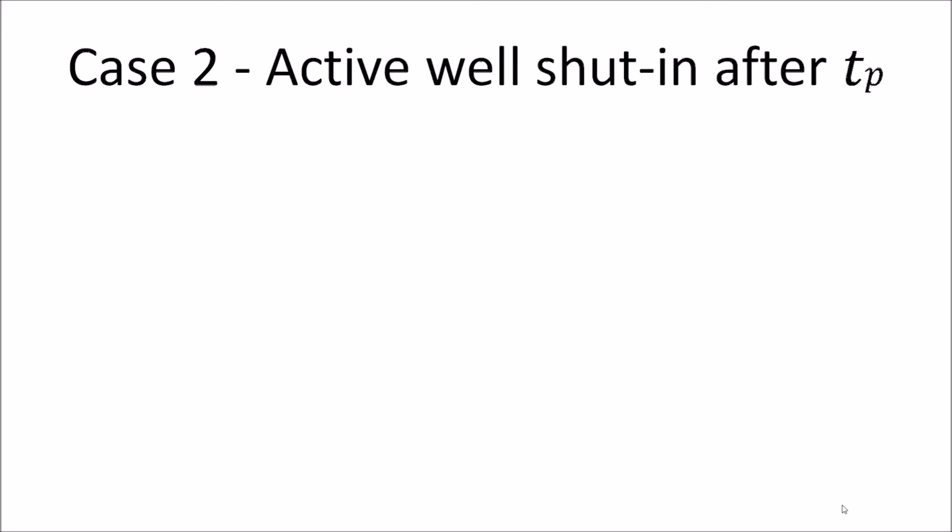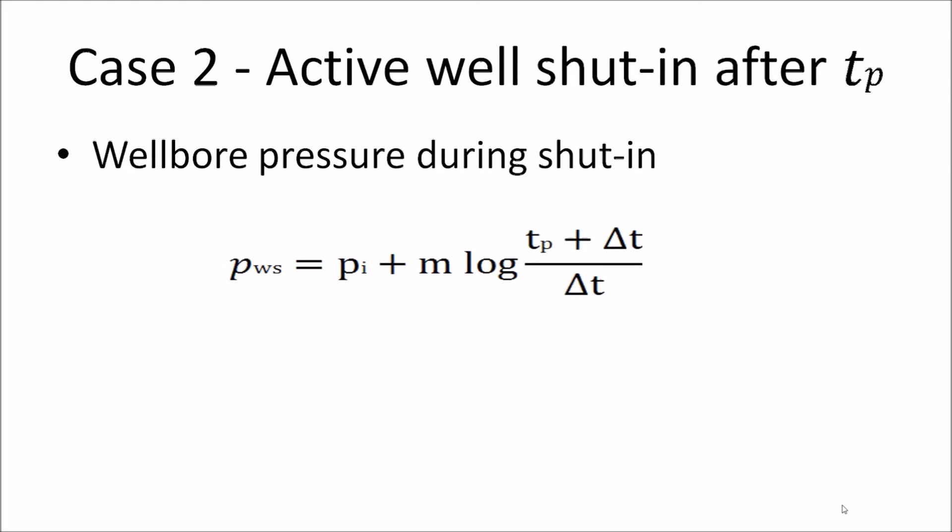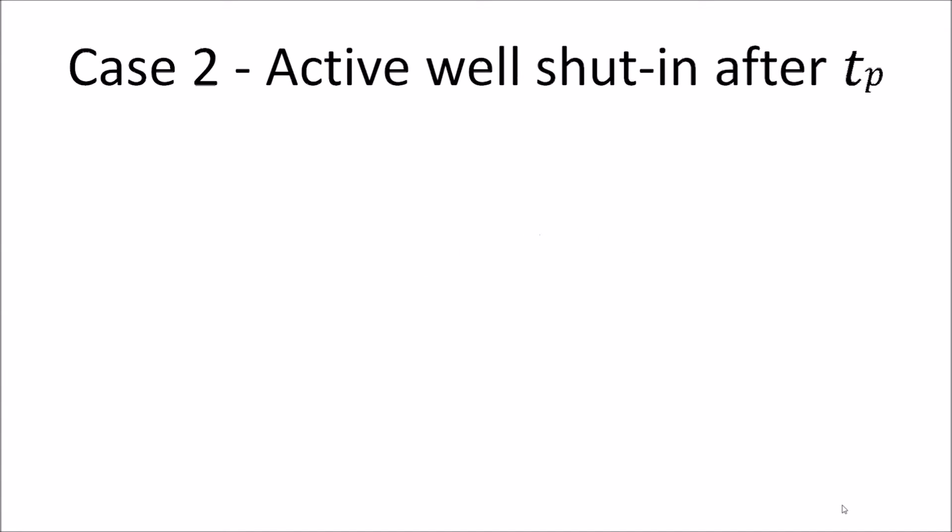Here, I will explain about the case 2, where active well is shut in after producing for time TP. For this case, well-bore pressure during shut-in can be calculated using this formula. Pressure equal to P1 plus slope multiplied to log Tp plus delta T over delta T, where P1 is initial pressure. From this formula, we can calculate permeability and porosity.